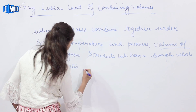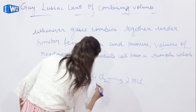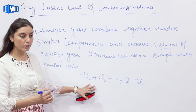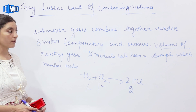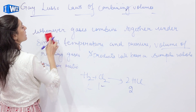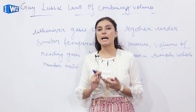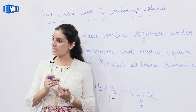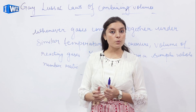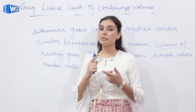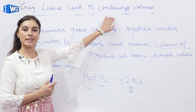To summarize: one unit by volume of hydrogen combined with one unit by volume of chlorine gives two units by volume of HCl. We have now studied all five laws of chemical combination: first, the Law of Mass Conservation; second, the Law of Constant or Definite Proportions; third, the Law of Multiple Proportions; fourth, the Law of Reciprocal Proportions; and fifth, Gay-Lussac's Law of Combining Volumes.